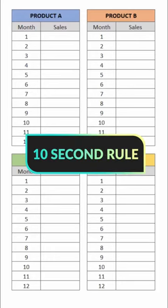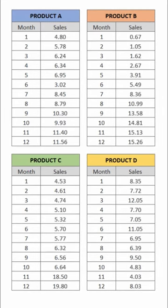I'm about to prove the power of data visualization in under a minute using the 10 second rule. Take a look at this monthly sales data for four different products. This is a variation of something called Anscombe's Quartet, which is fascinating because while each of these four series shares the same basic profiling stats, they tell very different stories when visualized.